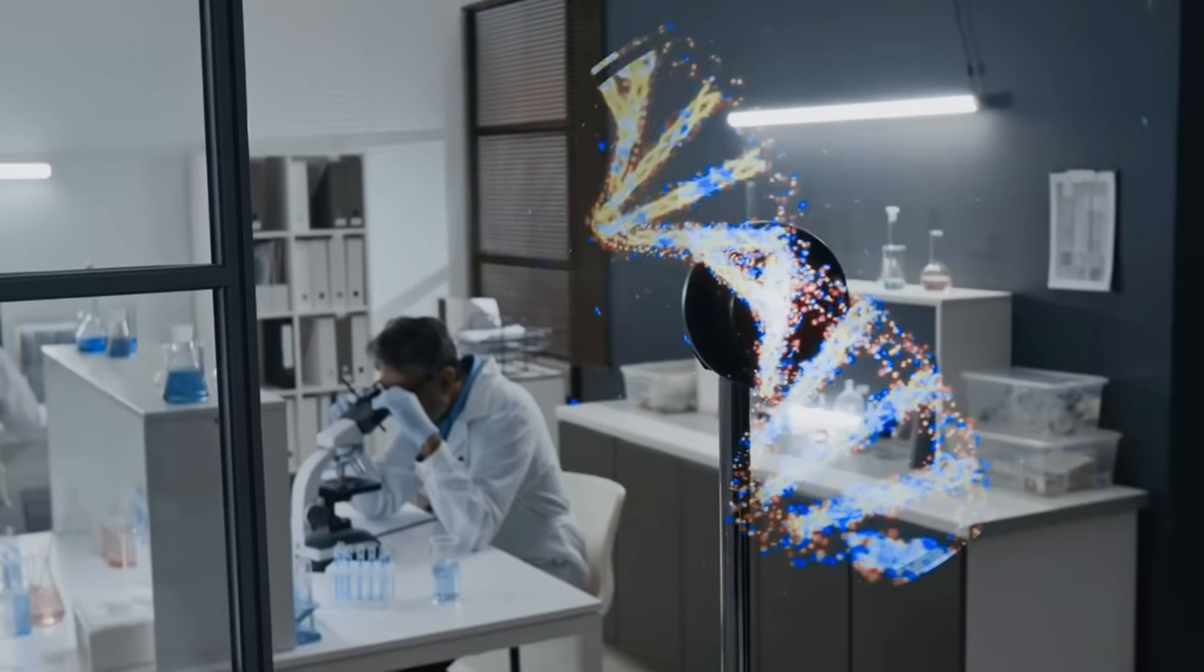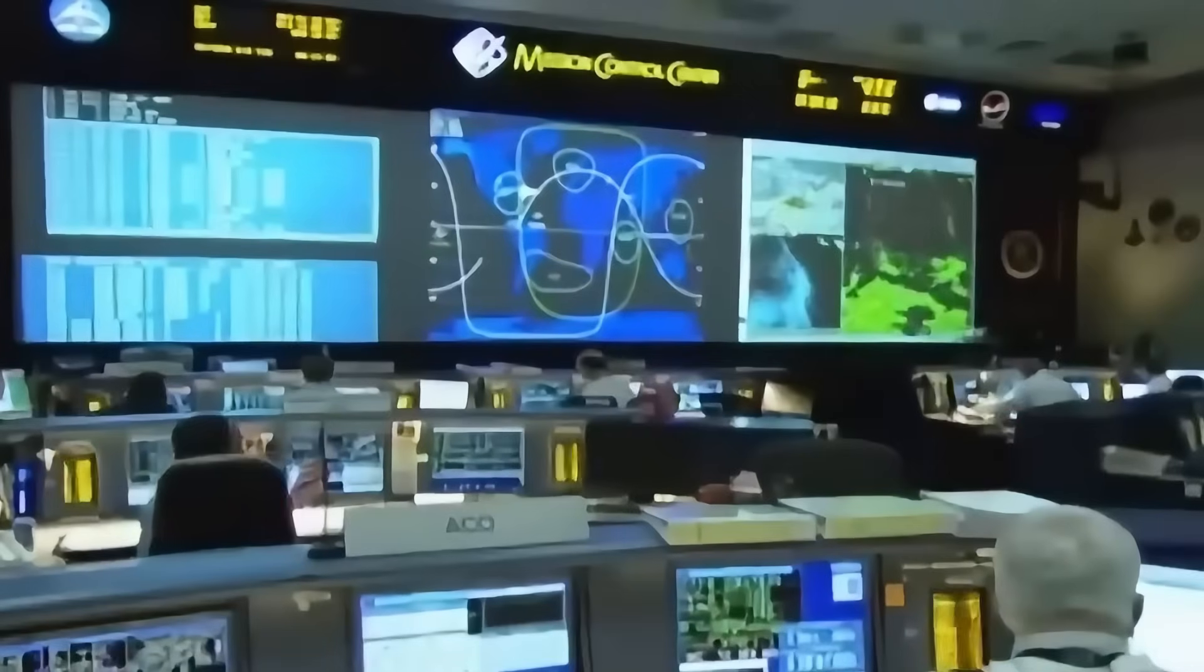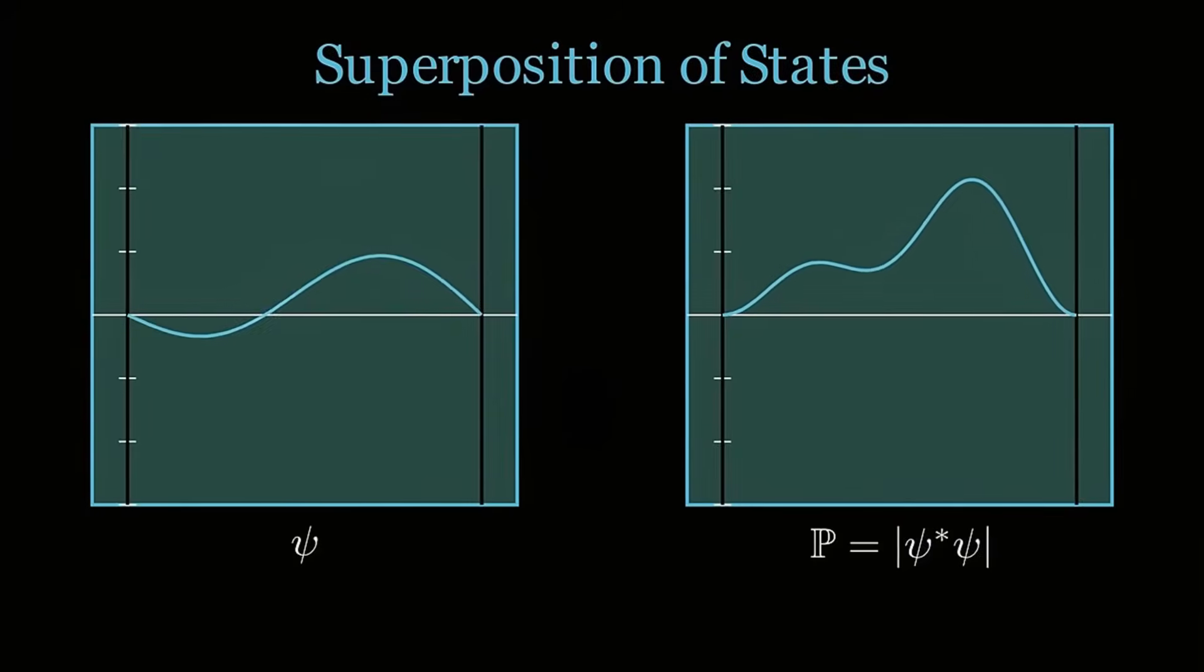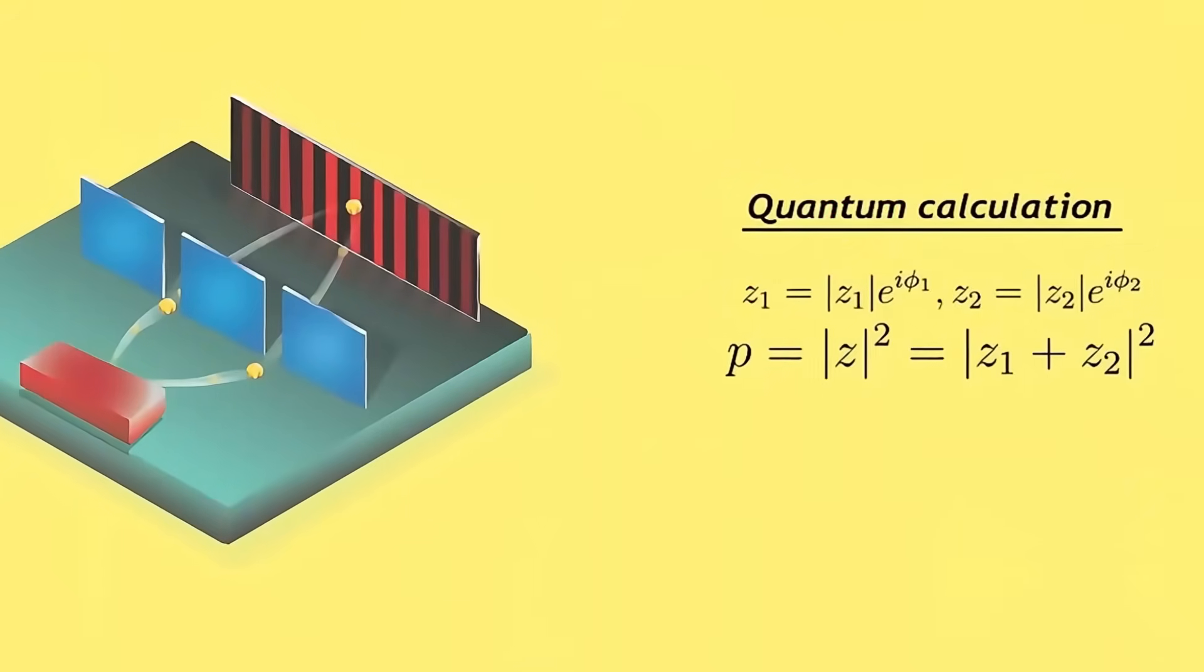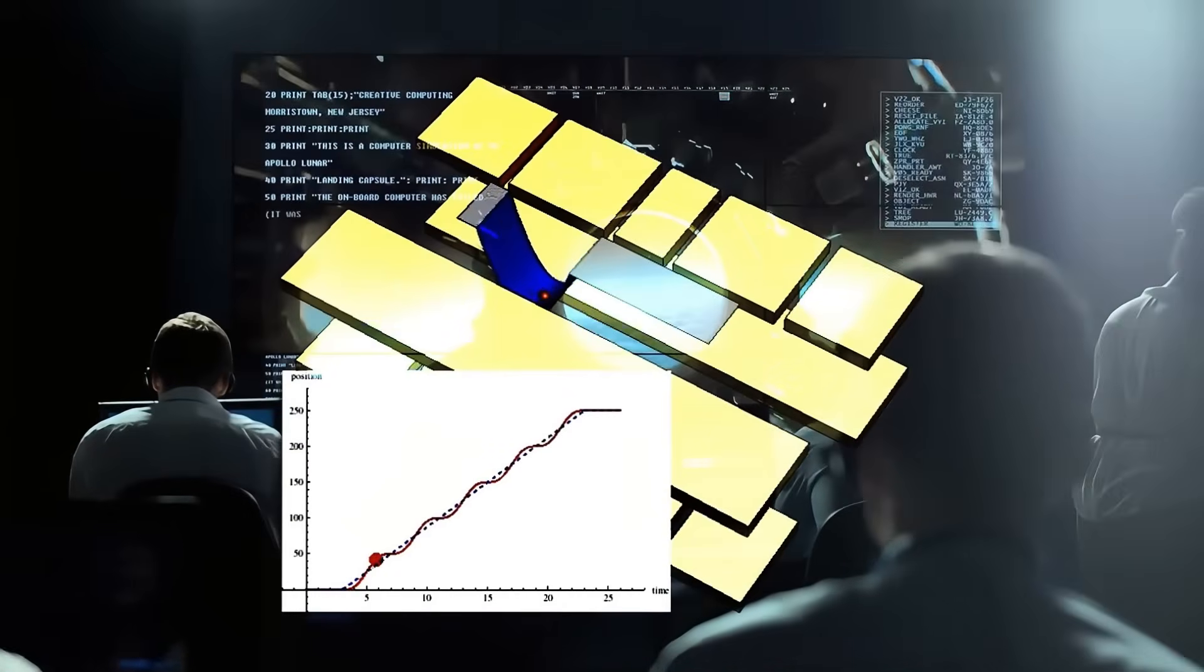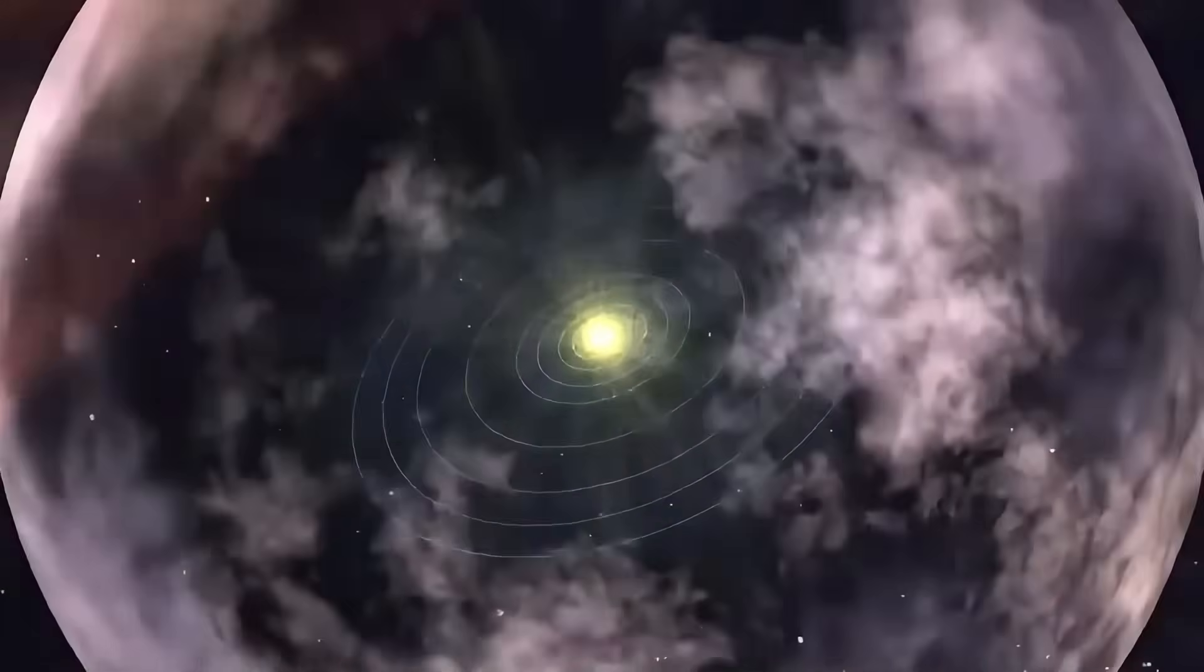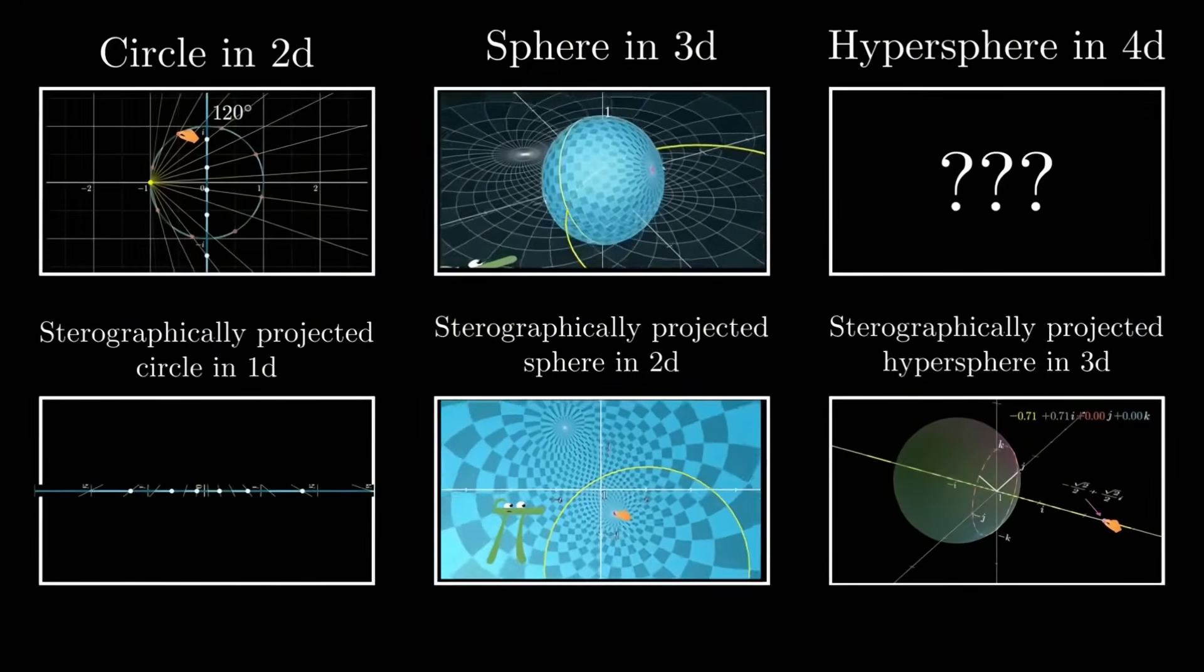Quantum decoherence explains how superpositions leak into the environment, selecting one classical history without invoking conscious collapse. Could this process be a metaphor for subtle divine action? Instead of overt miracles that shatter natural law, God's influence might guide decoherence, nudging possibilities toward outcomes that align with a higher purpose, all while preserving the appearance of unbroken physical order. In this view, miracles aren't violations but the natural unfolding of quantum probabilities under divine calibration.